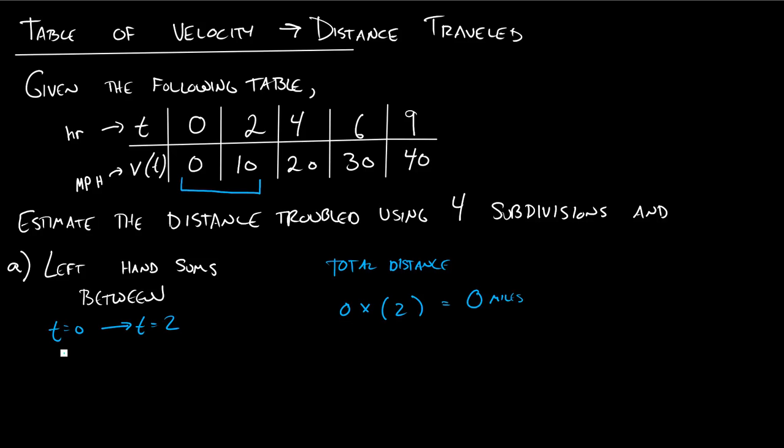Now let's think about between t equals 2 and t equals 4. What am I assuming I'm traveling between t equals 2 hours and t equals 4 hours? Well it's a left hand sum so I use the left side. So I'm using this 10 here. We're assuming I'll travel 10 miles an hour for 2 hours and I'll go 20 miles.